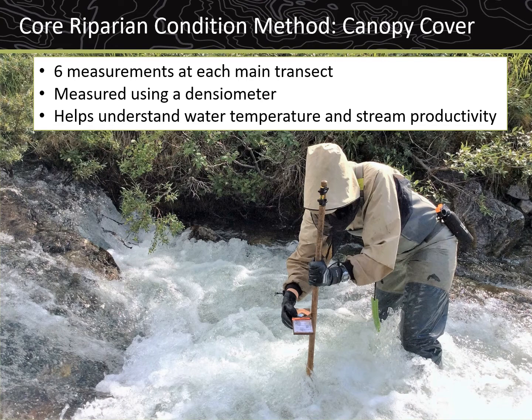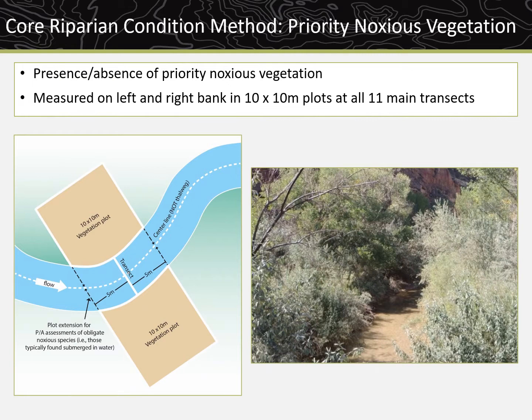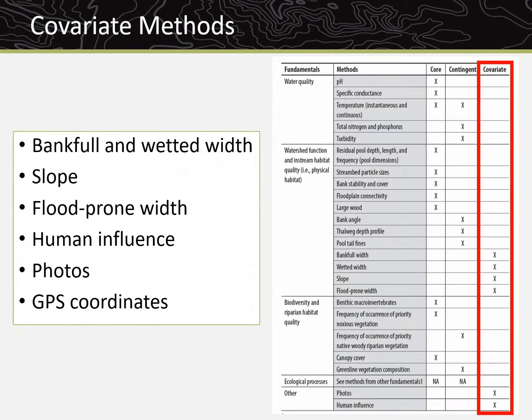Riparian condition is measured in two different ways throughout a Lotic AIM reach. Canopy cover is measured at six locations within the stream at all 11 main transects using a densiometer. Stream canopy cover is important because it plays a role in determining stream temperature and stream productivity. Riparian condition is also measured through assessing the presence or absence of priority noxious vegetation, measured on the left and right bank in 10 by 10 meter plots at all 11 main transects, extended into the stream to the centerline. Noxious vegetation such as Russian olive and tamarisk can alter habitat and geomorphology of streams.